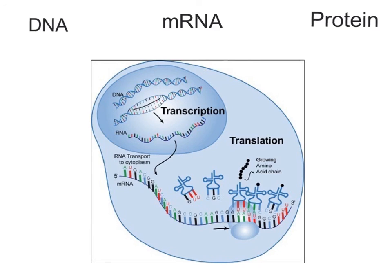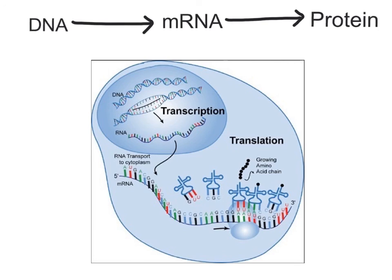What we're going to get into now is protein synthesis. Protein synthesis is made up of two separate processes that work together. The first, which occurs in the nucleus, is called transcription. The second, which happens in the cytoplasm at the ribosomes, is translation. During transcription, the DNA message is passed on to mRNA. During translation, the messenger RNA is used to make a protein — a long chain of amino acids. So going from DNA to mRNA is transcription, and going from mRNA to protein is translation.